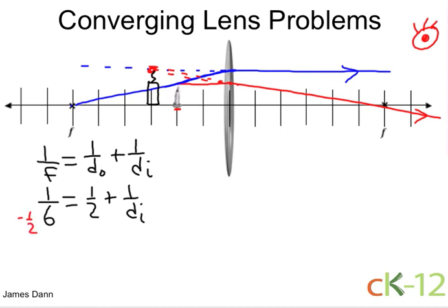So I will subtract a 1 half from both sides. 1 half minus 1 half is 0. So on this side, I have 1 sixth minus 1 half. On the other side, I just have 1 over the image distance, which is just 1 over di. And then if I come back here to finish the problem, 1 sixth minus 1 half.